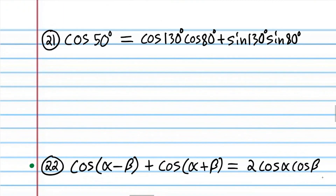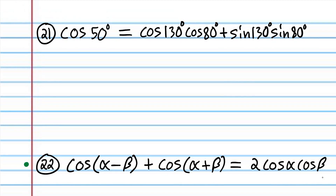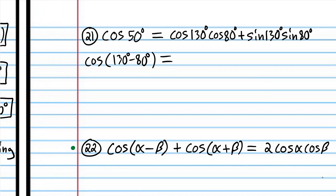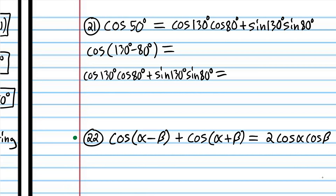Let's try one more before you try one on your own. Now we have actual angle measures rather than variables. We need to convert cosine(50°) into the given expression. I'll convert 50 degrees to 130 minus 80 degrees. Then using the violet cosine formula: cosine 130 times cosine 80, and since we're subtracting, we add the sine terms — that's the opposite sign for cosine. That's it, we're done and the equation is proved.